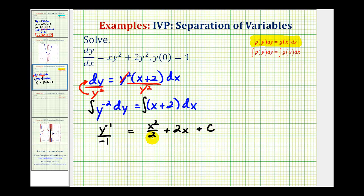Now our goal is to solve this equation for y. So what we'll do here is move this down to the denominator. So we'll have one over negative one times y, or just negative one over y equals x squared over two plus two x plus c. Let's continue working with this on the next slide.